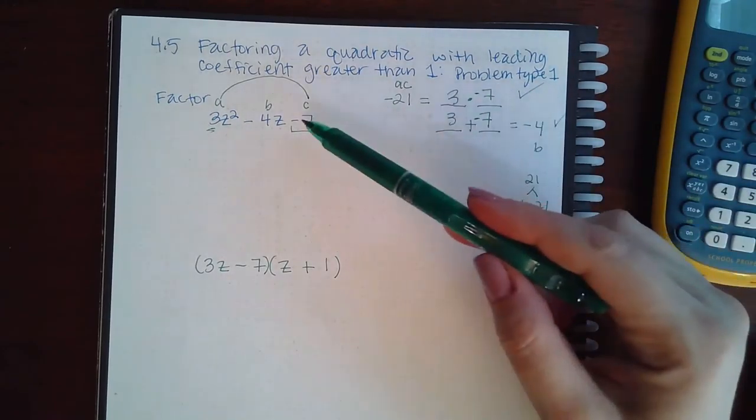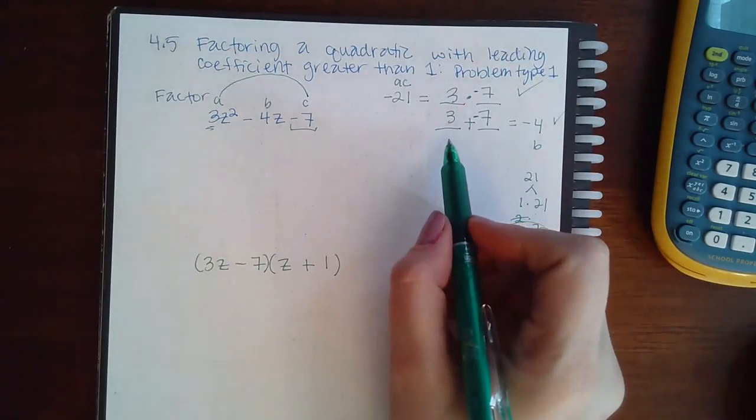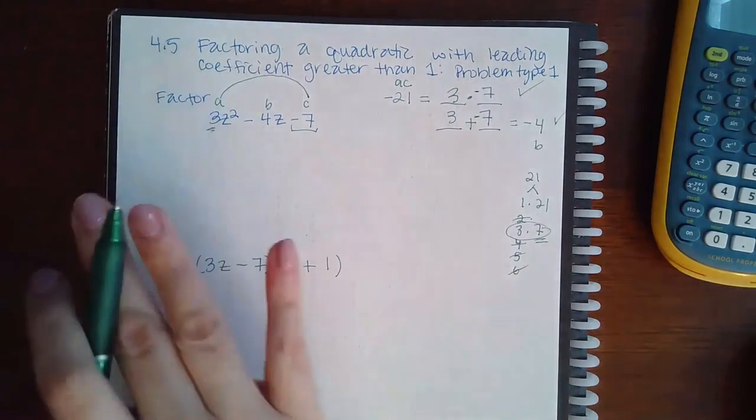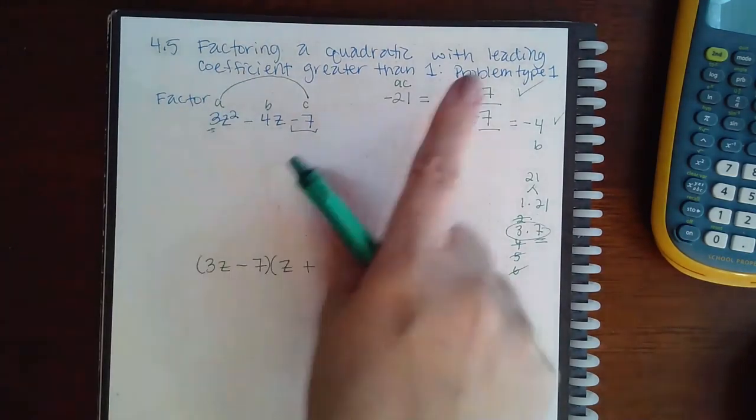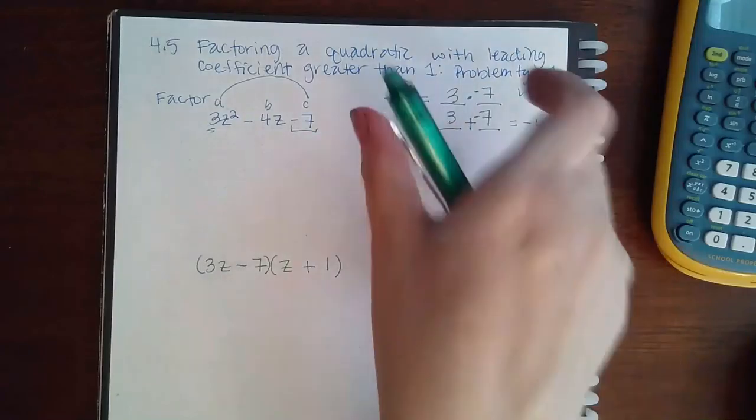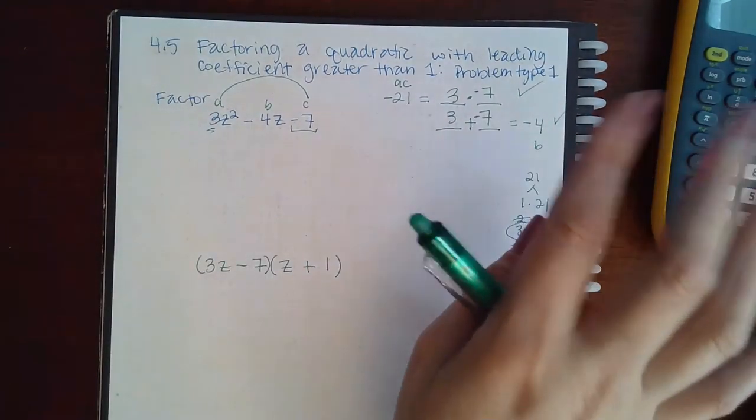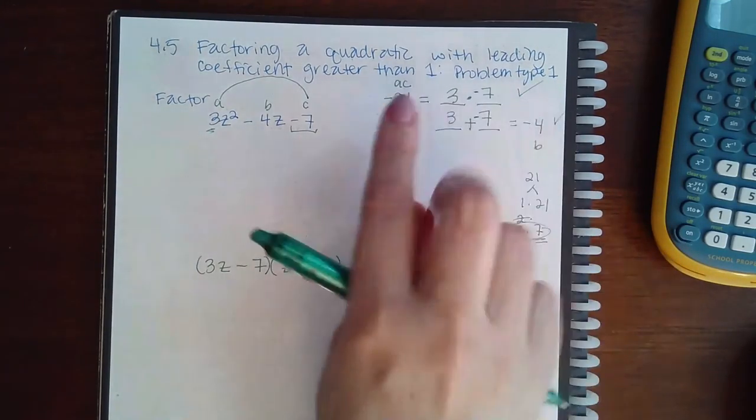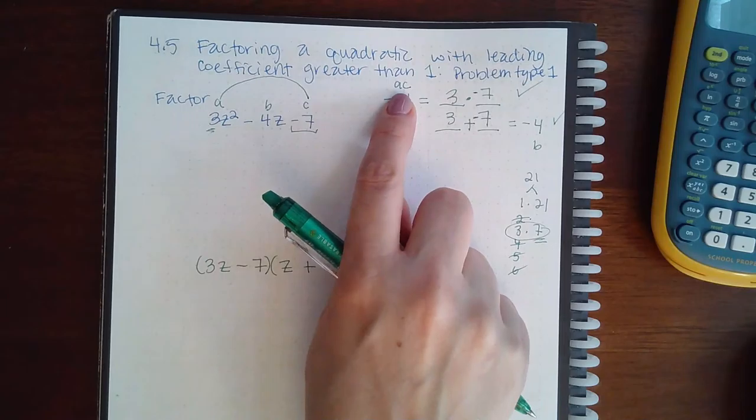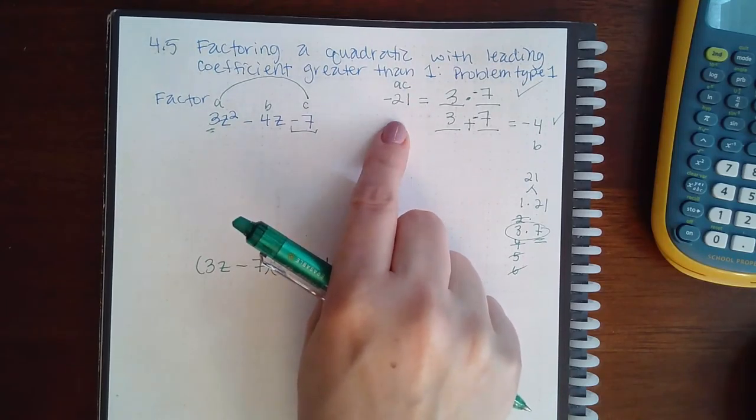So these are the two numbers that I'm gonna need to be able to factor this problem out. But what I do with them is interesting. It's not like the problems where this wasn't here. Once I had those magic numbers, you could just put them into the parentheses and you were done with the problem. Here what I do with them is completely different because the a is affecting everything.